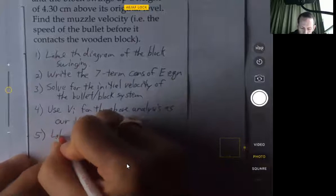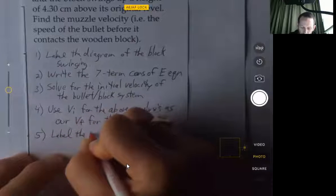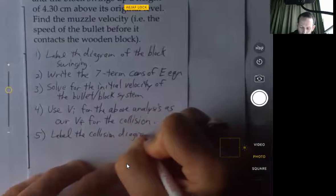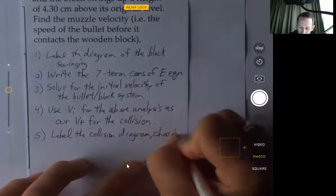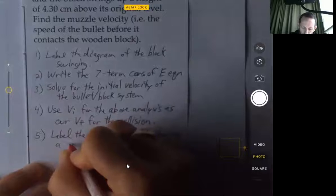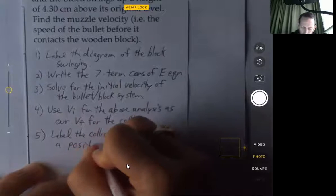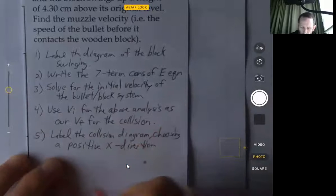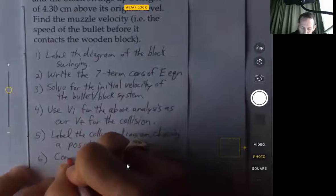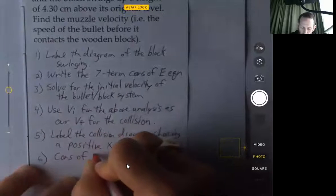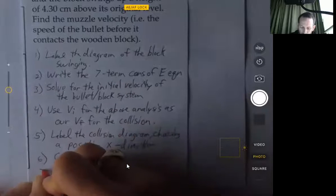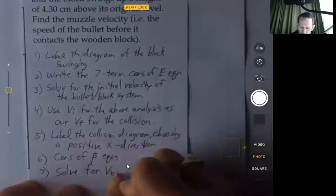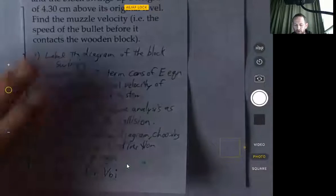And then we're going to label the collision diagram. We're going to be using the positive x-direction. Then we're going to write the conservation of momentum equation and solve for the initial velocity of the bullet.